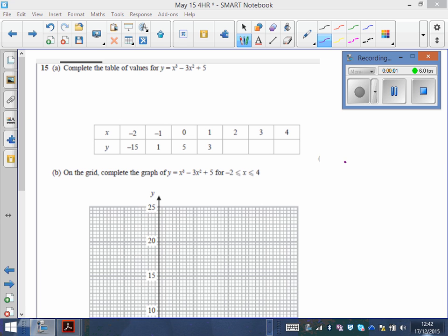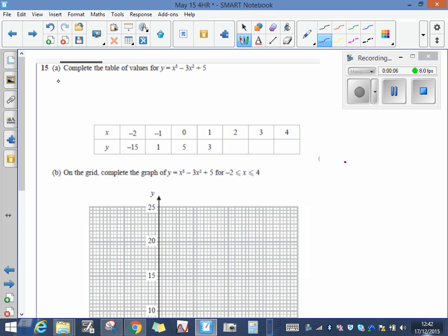The easiest way of filling in a table of values is to use the table function in your calculator. You need to find mode, then look for table. What you'll see on your screen is f of x equals, and you then type in x cubed. In order to do x cubed, you're going to need to press alpha.